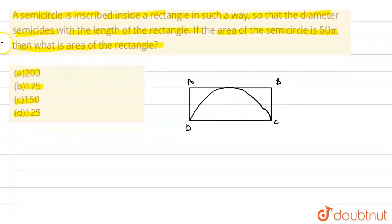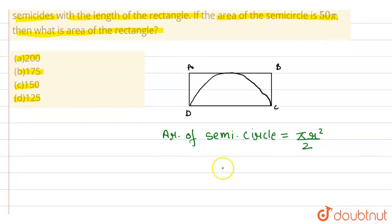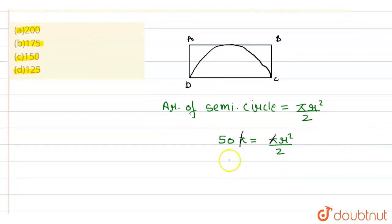So, अगर हम यहाँ से semicircle की radius निकाल लें, तो हमारे rectangle की length भी हमें मिल जाएगी. हमें area of semicircle दिया गया है: 55. Area of semicircle is always πr²/2. So, 55 = πr²/2. इसको solve करें तो π से π कट जाएगा, और r² की value हमें मिलेगी 100, और r की value मिलेगी 10.